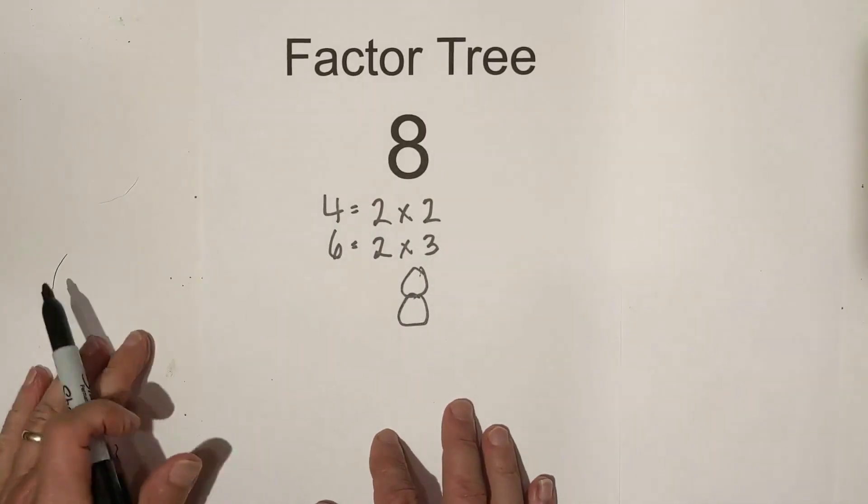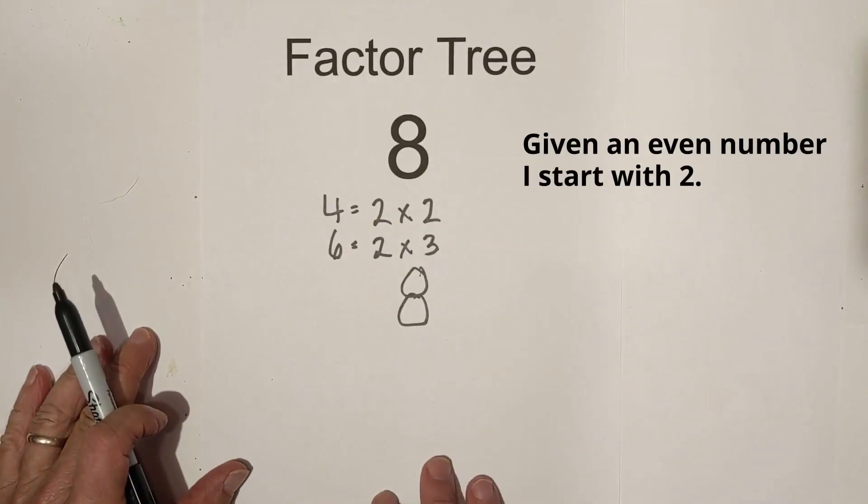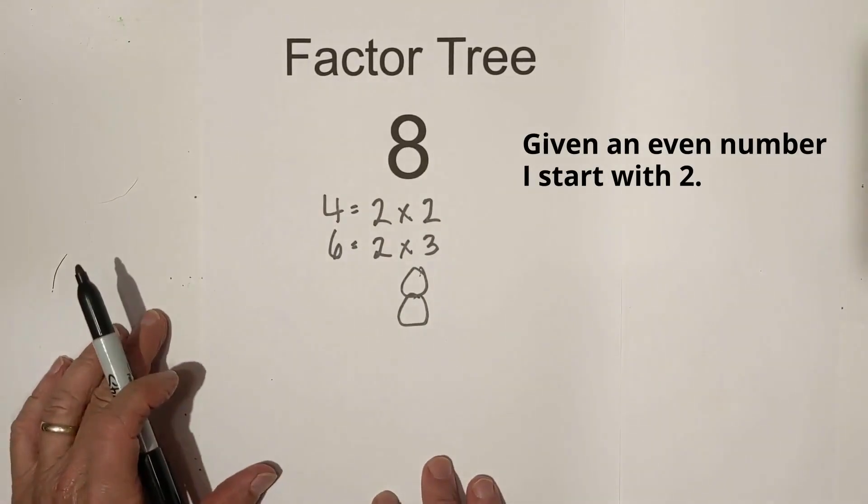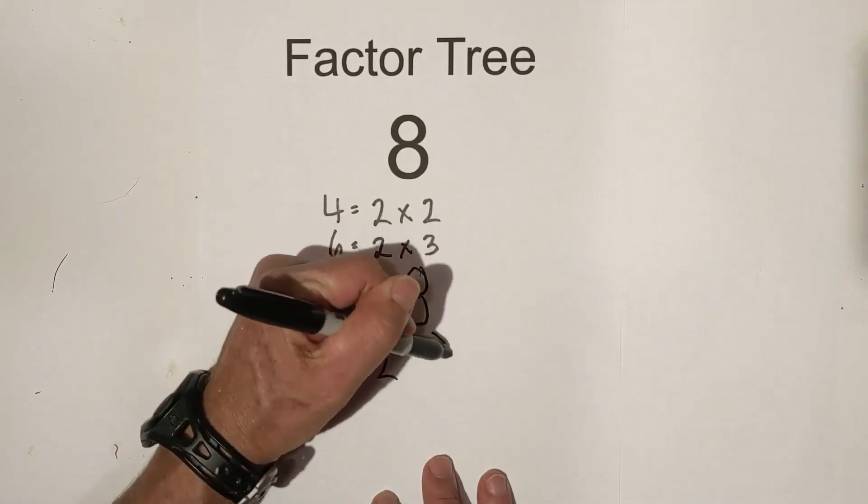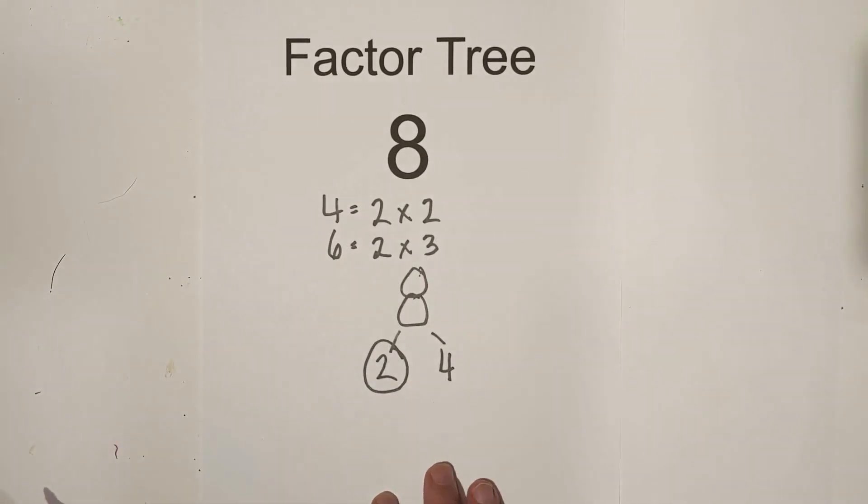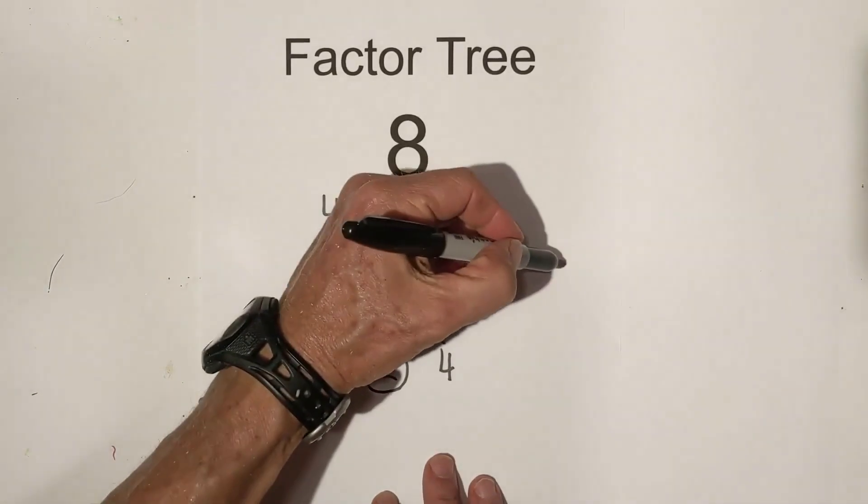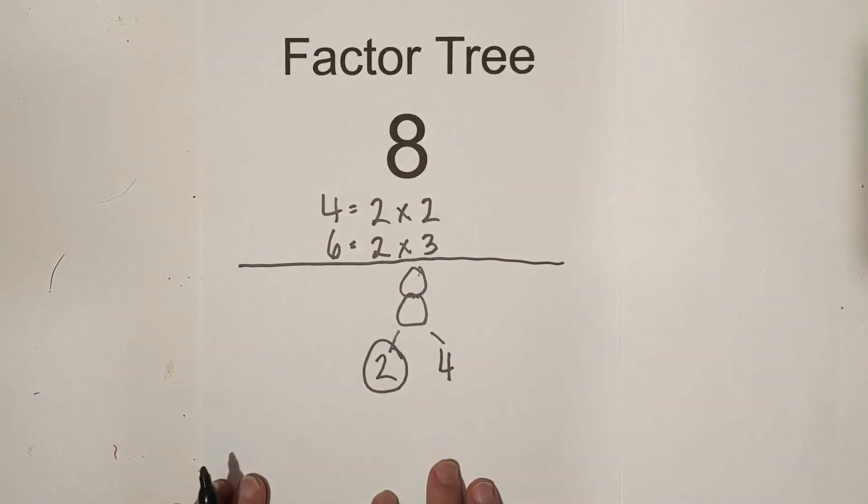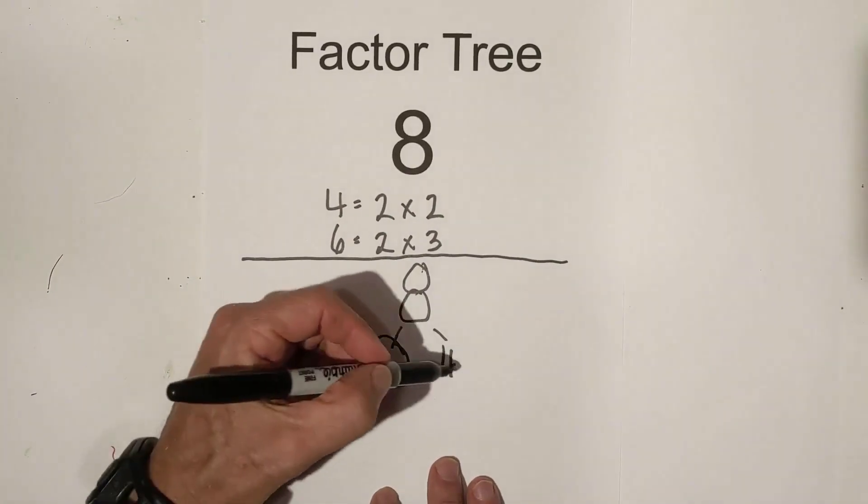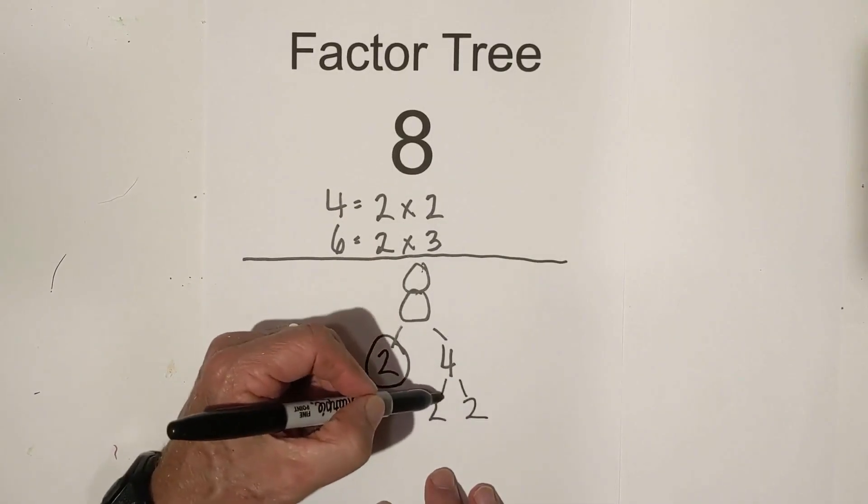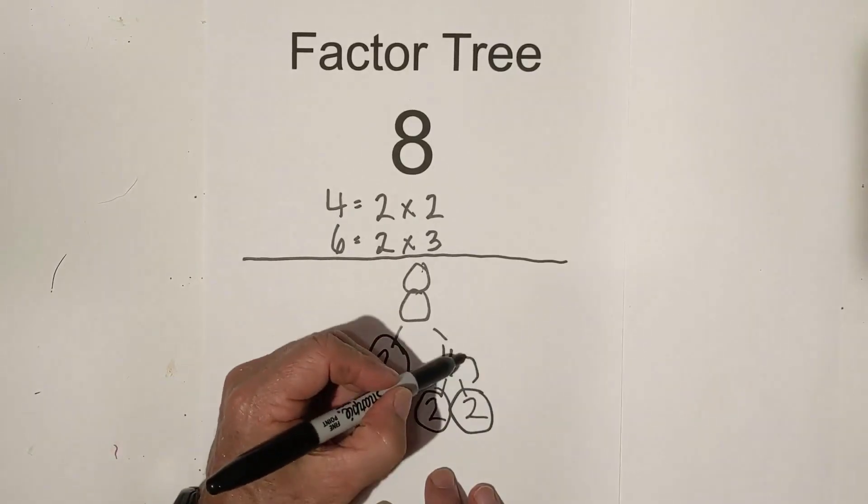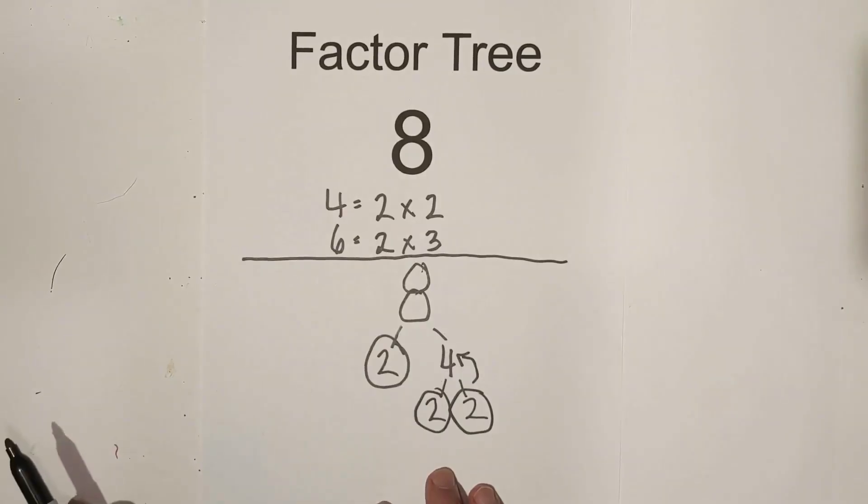Anytime a number is even, I always just start with two because two is easy to divide with. So two times four is equal to eight, and I circle the prime number. I'm gonna do this so it's not quite as confusing. Next, I have a prime number here, so let's focus on the four. We have two times two equals four. The factors of four are two times two. Now I am down to prime numbers, so I'm finished.